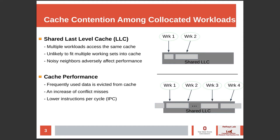Workloads pinned to separate cores also have L1 and L2 caches separate from co-located workloads executing on the processor, so cache contention does not occur in the L1 and L2 caches. However, the last level cache is shared across all of the cores, so careful placement of workloads and the management of cache are necessary to avoid performance degradation.